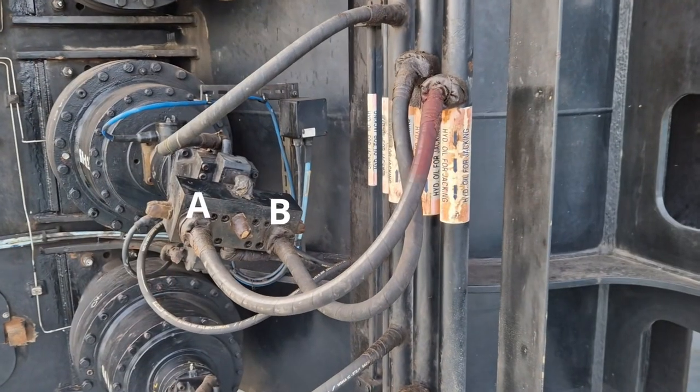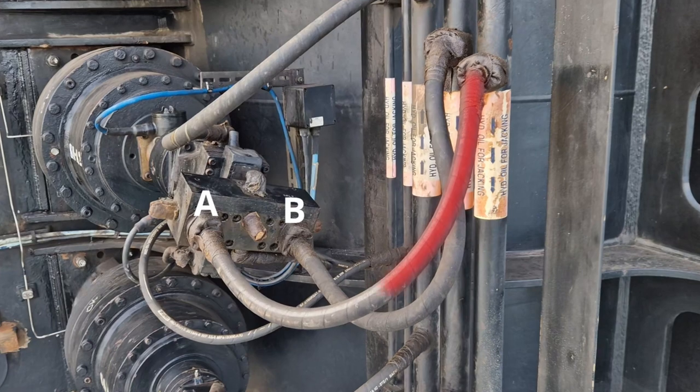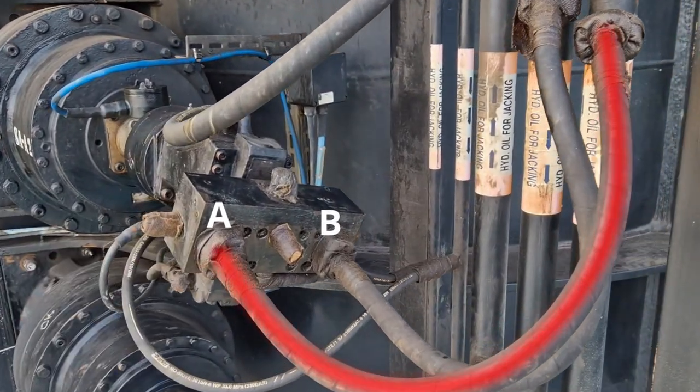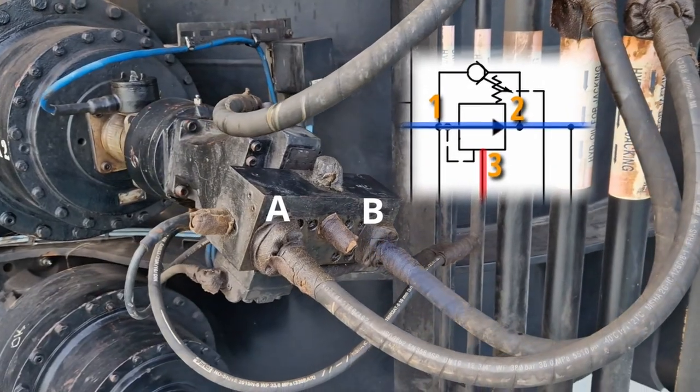You can see here how this works. The high pressure oil enters through the A port, bypassing the counterbalance through the check valve, spinning the motor and then pushing open the counterbalance on the port B.